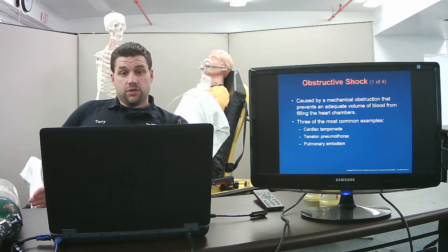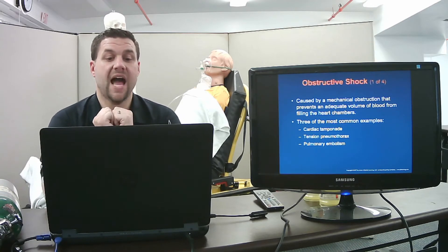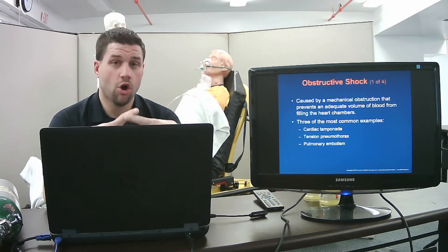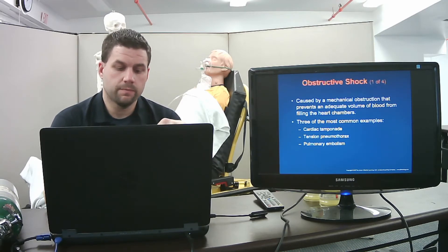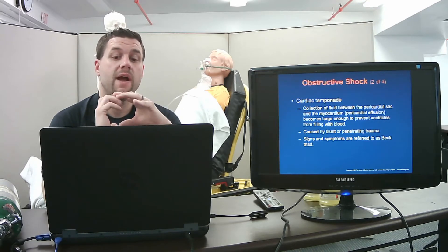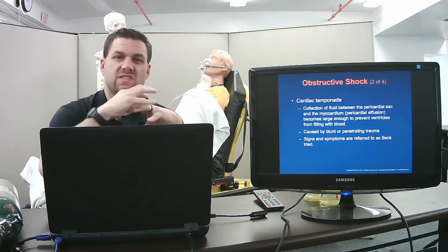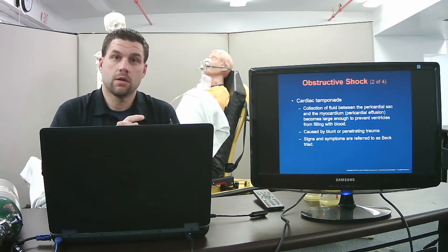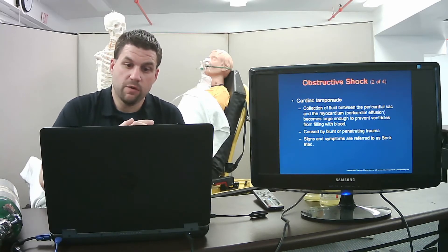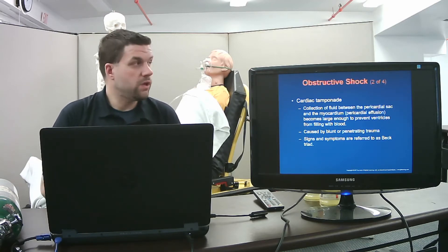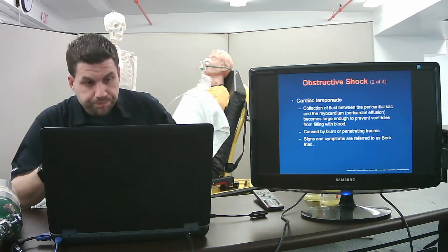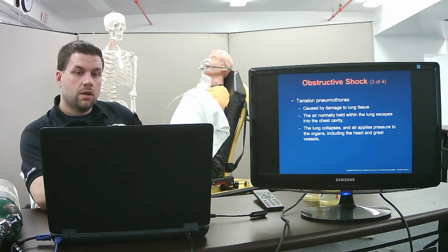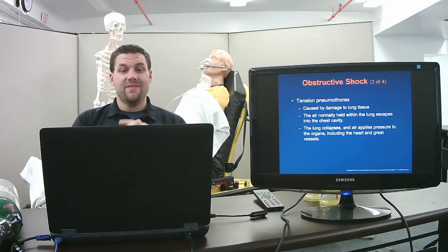Obstructive shock is caused by a mechanical obstruction preventing adequate blood volume from filling the heart's chambers. The three most common forms are cardiac tamponade, tension pneumothorax, and pulmonary embolism. Cardiac tamponade is a collection of fluid between the pericardial sac and the myocardium, large enough to prevent the ventricles from filling — caused by blunt or penetrating trauma. Signs are referred to as Beck's Triad.